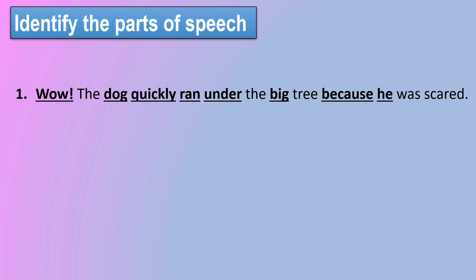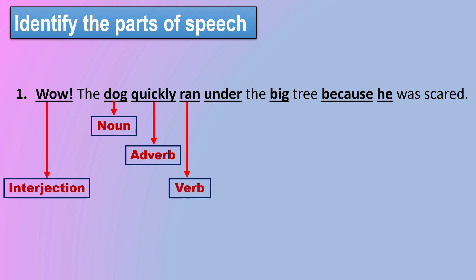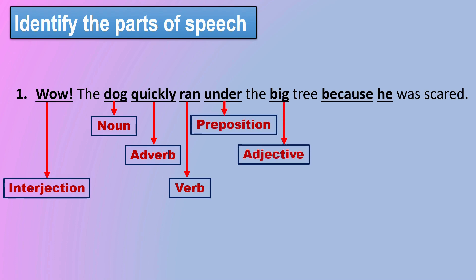Now let's see a sentence with all parts of speech. "Wow, the dog quickly ran under the big tree because he was scared." In the sentence: wow is an interjection, dog is a noun, quickly is an adverb, ran is a verb, under is a preposition, big is an adjective, because is a conjunction, and he is a pronoun.